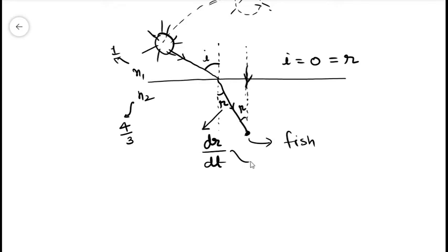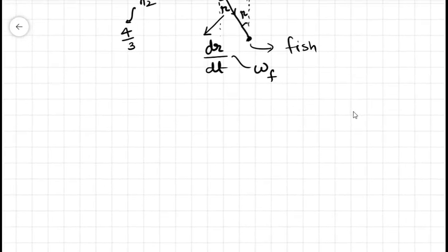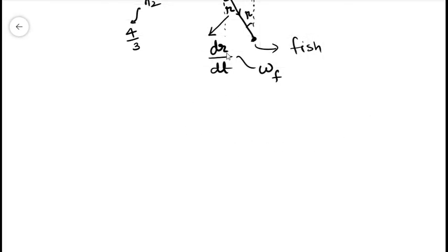Let us assume that it is equals to omega fish. And for the person on the ground which is seeing this i angle, the angular speed of the sun for this person will be omega g, that will be equals to di over dt. So we have to find the time derivatives of r and i, so we will apply Snell's law.